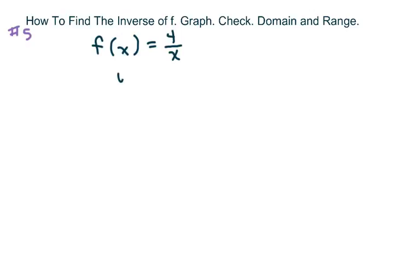So basically what happens is we're going to switch this to y. You switch the x and the y. You get x equals 4 over y. And when you solve for y, you get the same thing. So you're going to get 4 over x again.